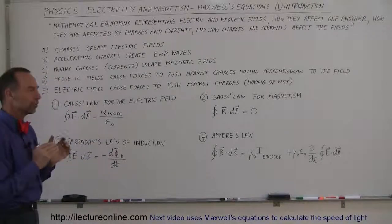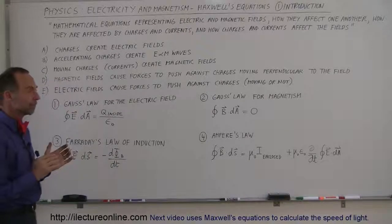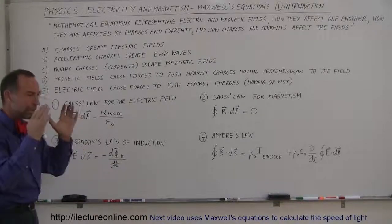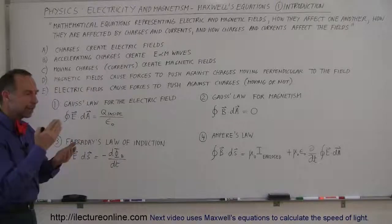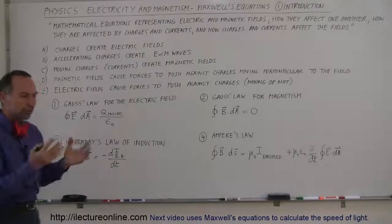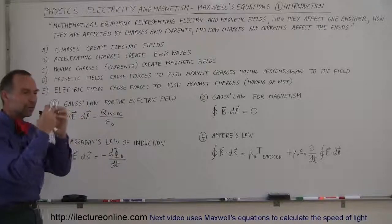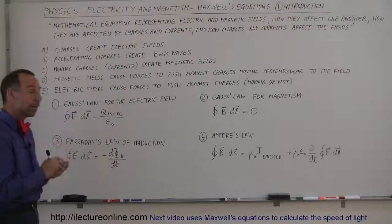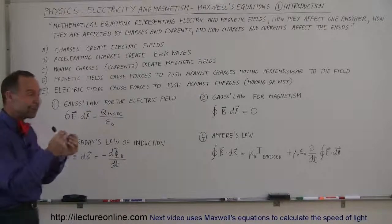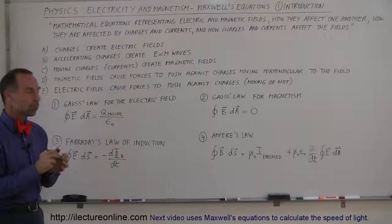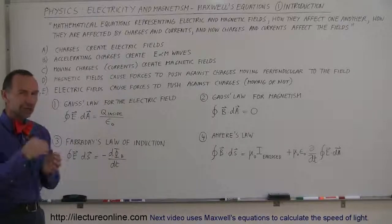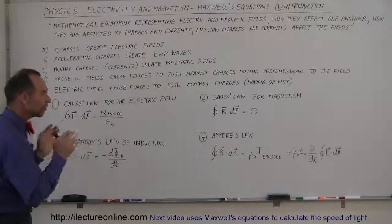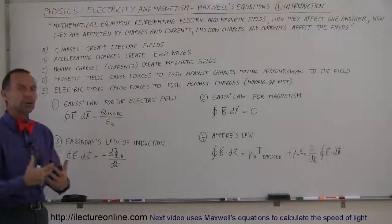Maxwell is very smart, way smarter than most people alive today. He was able to look at electricity and magnetism, electric fields, magnetic fields, currents and charges, and put everything together in a form where he was able to explain them mathematically. He was also very clever at finding a mathematical way of showing what the speed of light was — I'll get into that in more detail as we go on with these lectures. He put a set of equations together which are now known as Maxwell's equations.